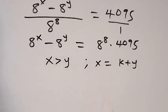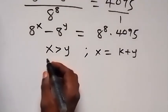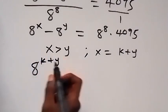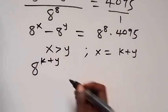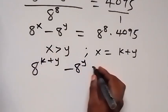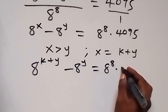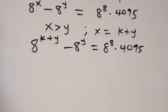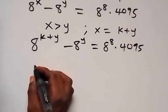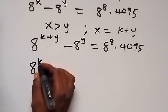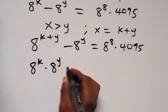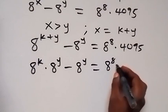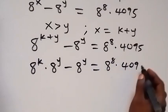Then we can rewrite this equation in terms of k and y. This will be 8 raised to power k plus y — instead of x, we write k plus y — then minus 8 raised to power y, equals 8 raised to power 8 times 4095. We can also separate this as 8 raised to power k times 8 raised to power y, minus 8 raised to power y, which equals 8 raised to power 8 times 4095.